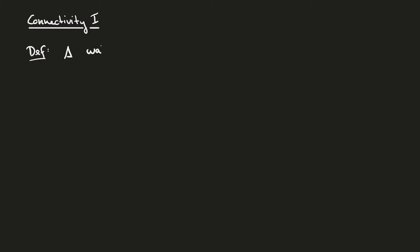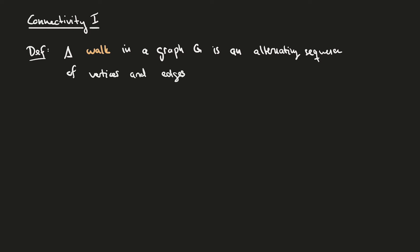A walk in a graph G is an alternating sequence of vertices and edges. So we have some vertex V0 followed by an edge E0, followed by a vertex V1, followed by an edge E1, and so on, all the way up to an edge E(K-1) and a vertex VK. We require that this sequence satisfies the property that edge Ei is equal to the edge between vertex Vi and vertex V(i+1).